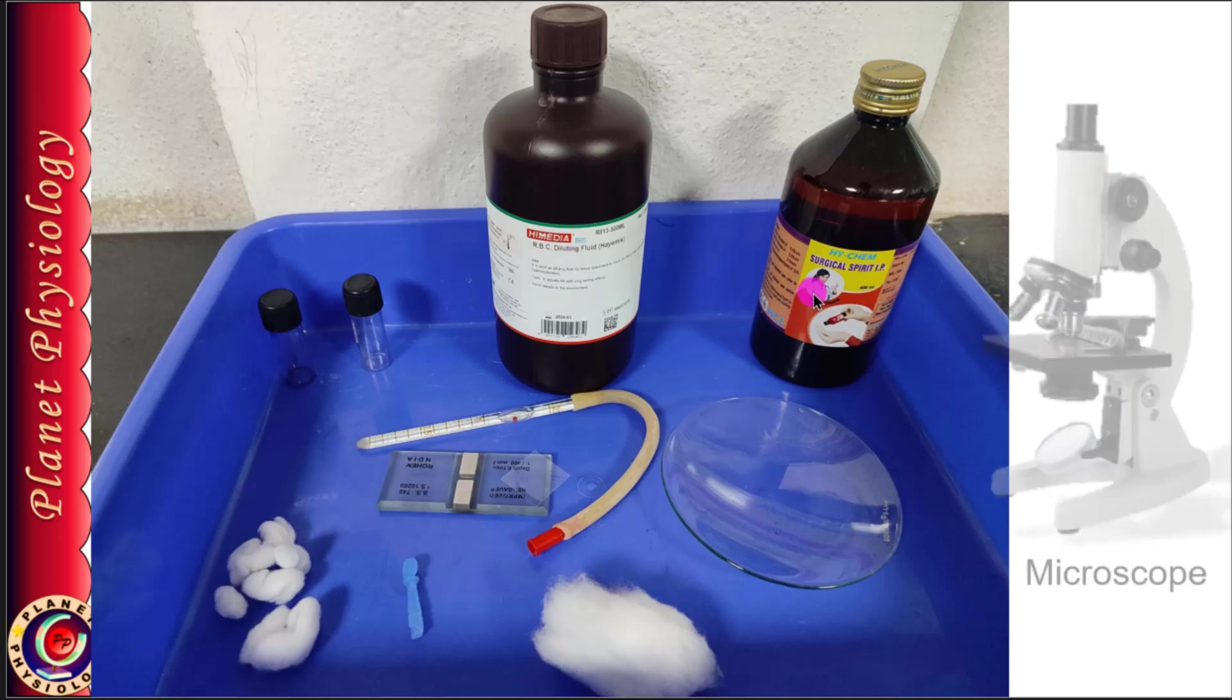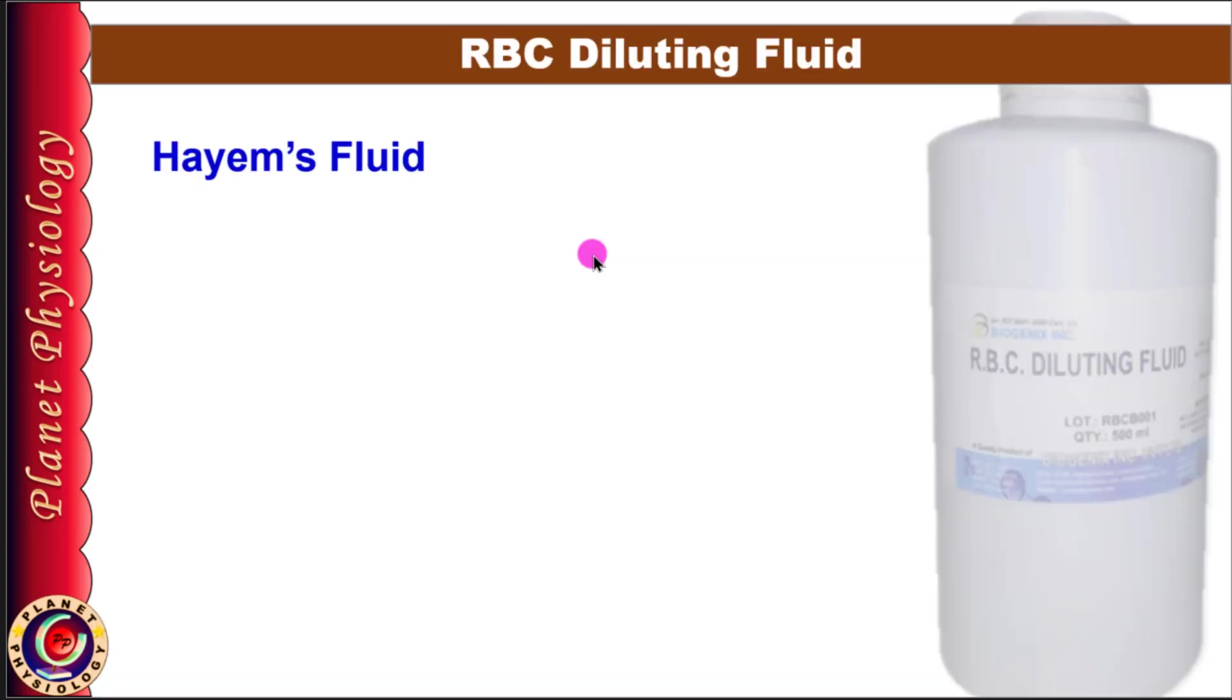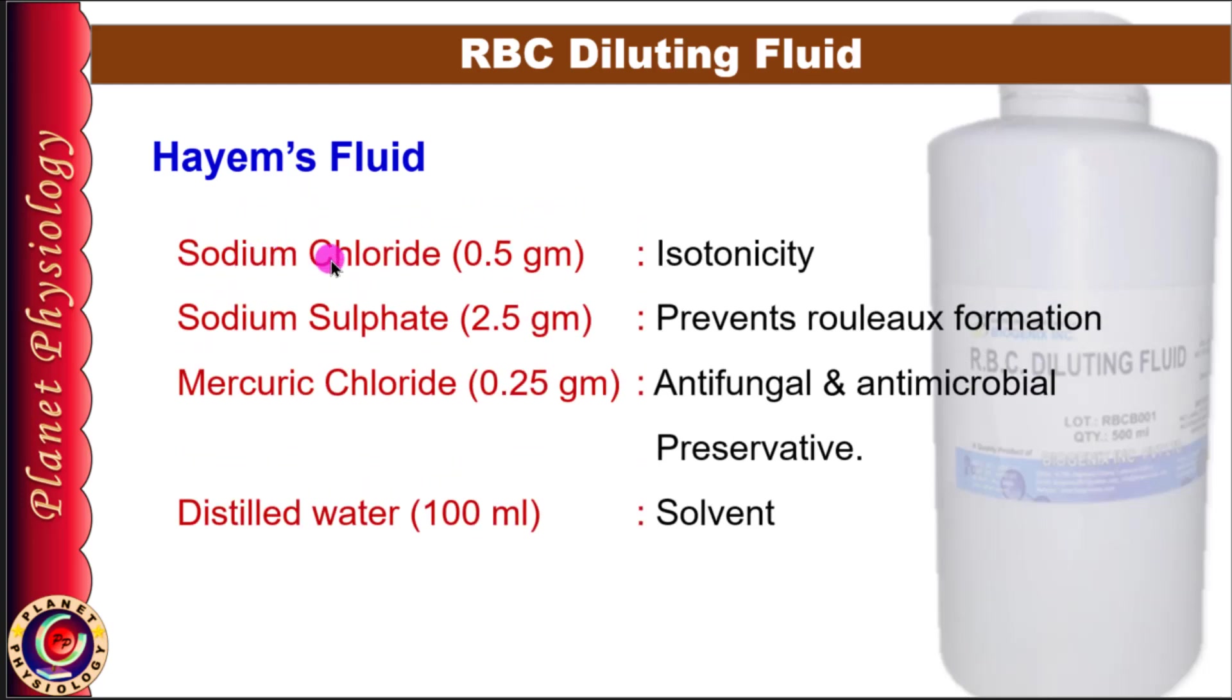and of course microscope. When counting specific cell types, it's crucial to select appropriate diluting fluid. For RBCs, we commonly use Hayem's fluid, which contains 0.5 gram of sodium chloride for isotonicity, 2.5 gram of sodium sulfate to prevent rouleaux formation and contribute to isotonicity, and 0.25 gram of mercury chloride as preservative to prevent microbial growth. These are dissolved in distilled water to make up 100 ml of final solution.